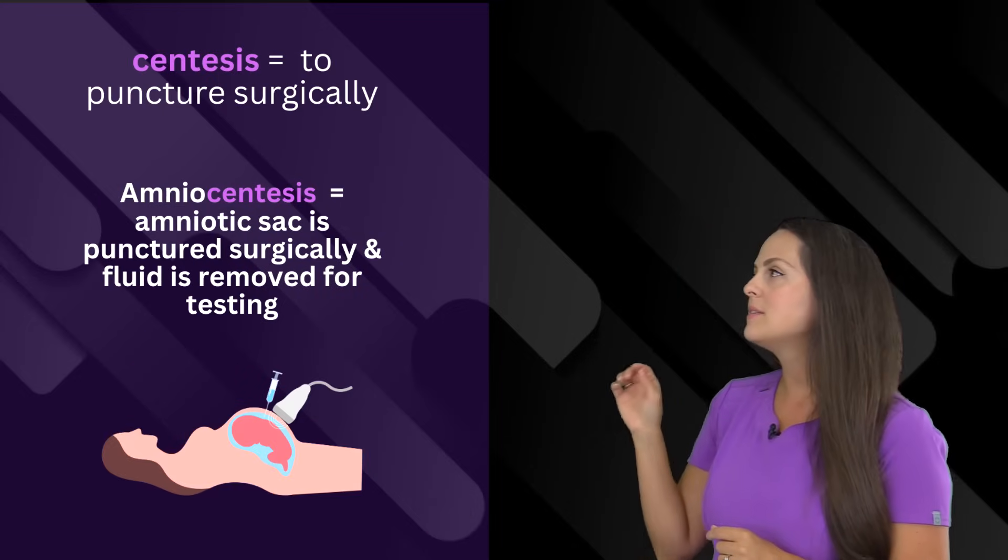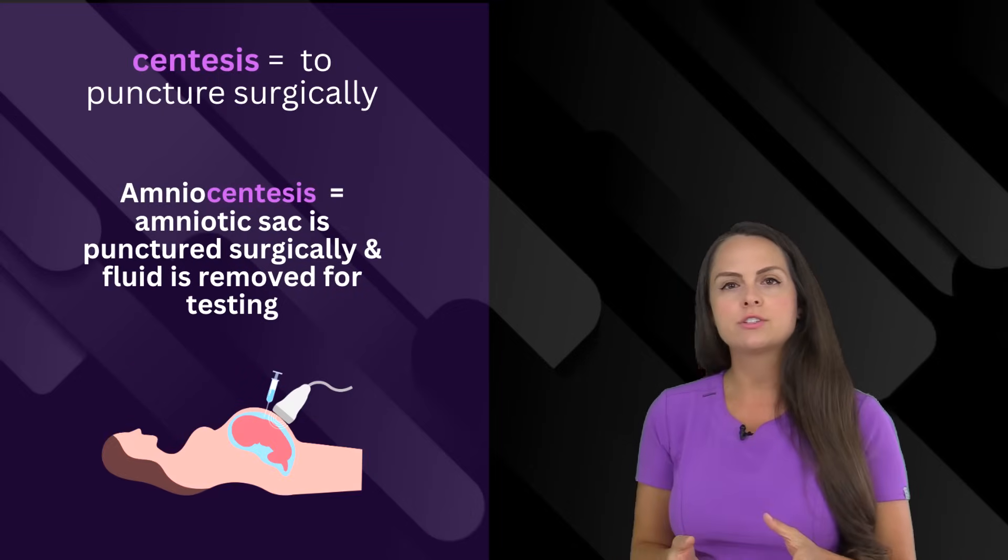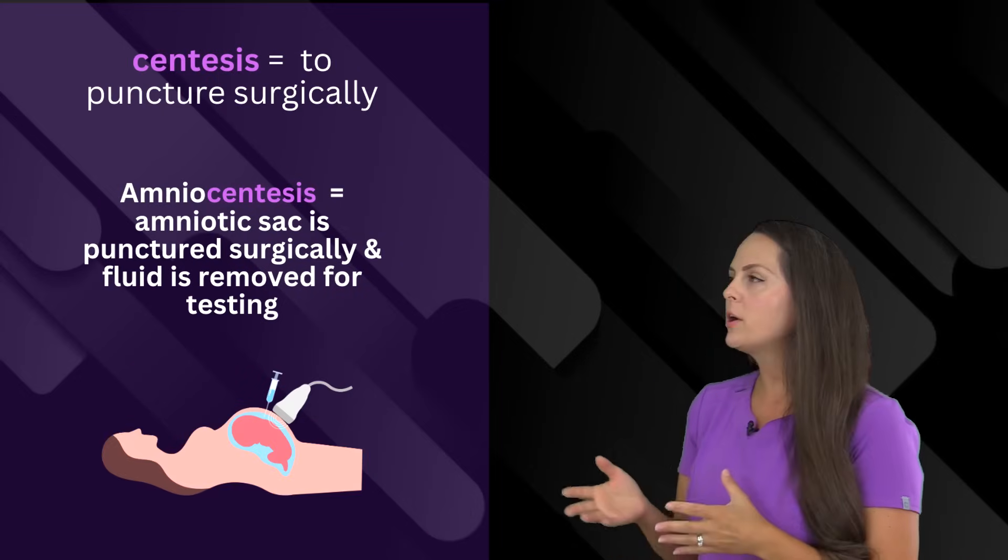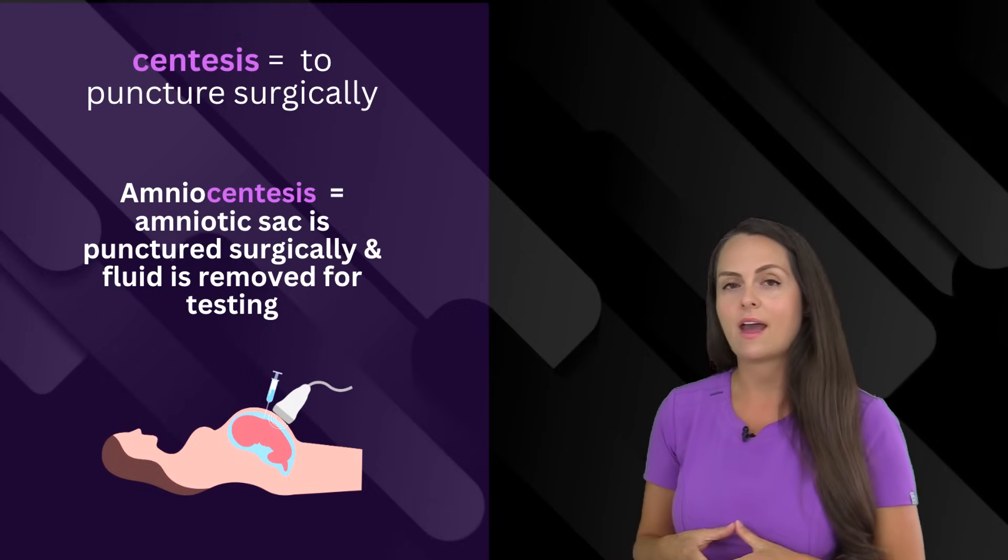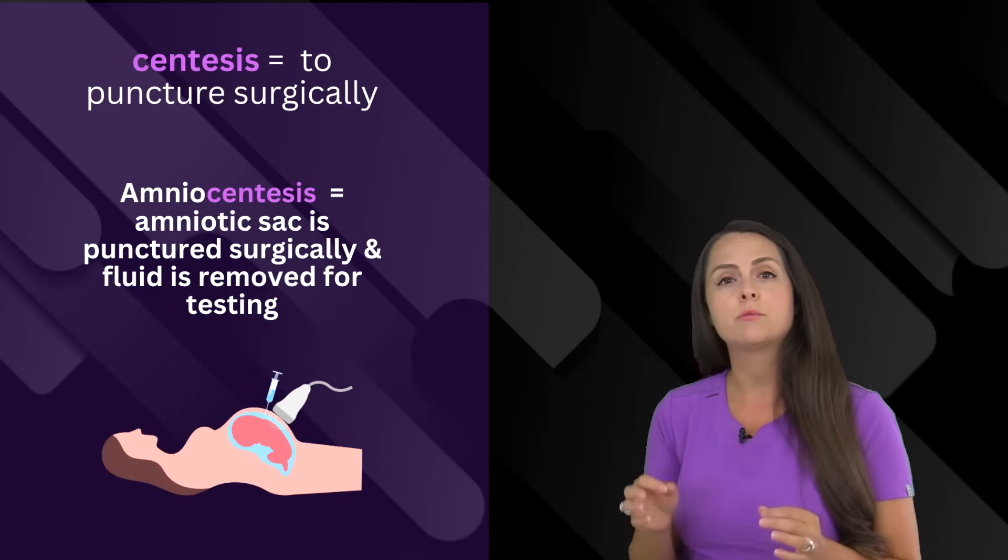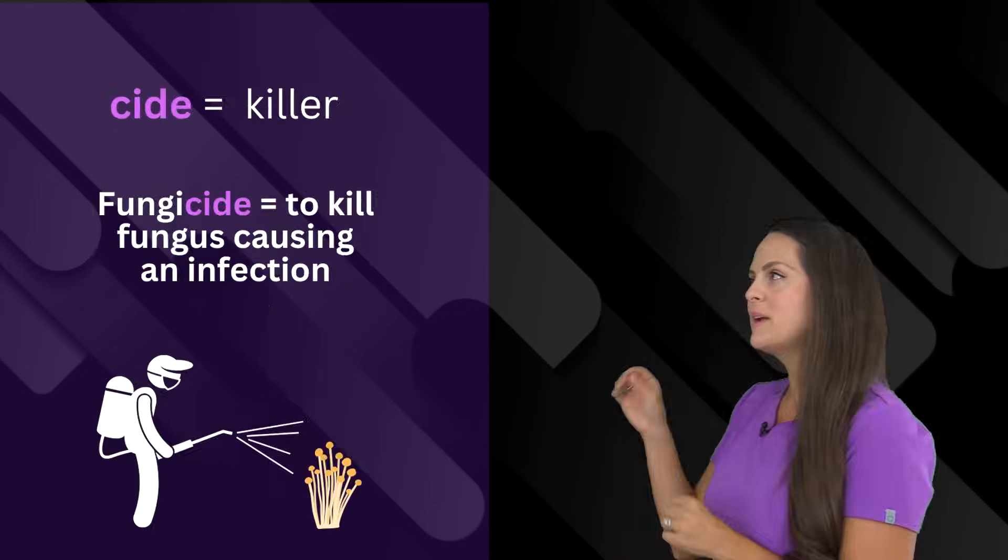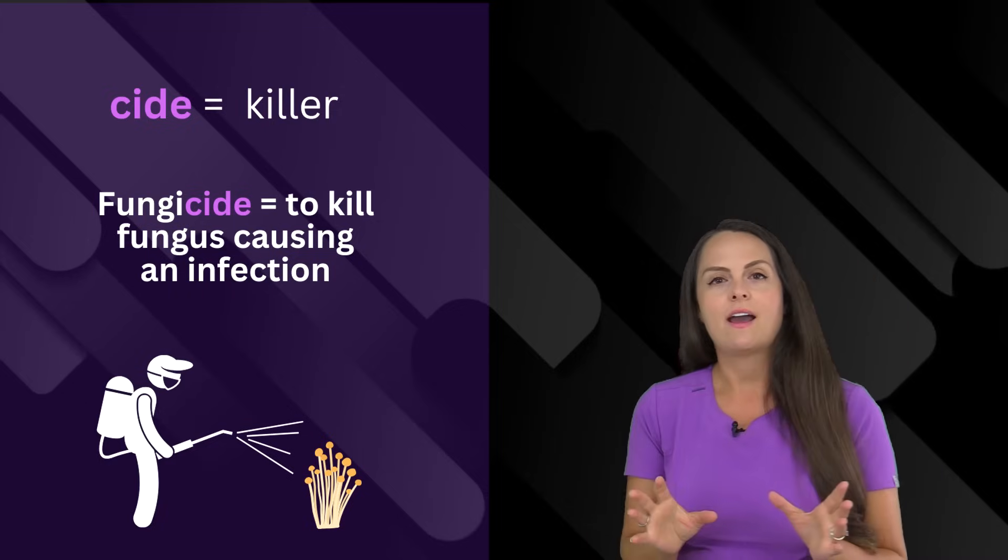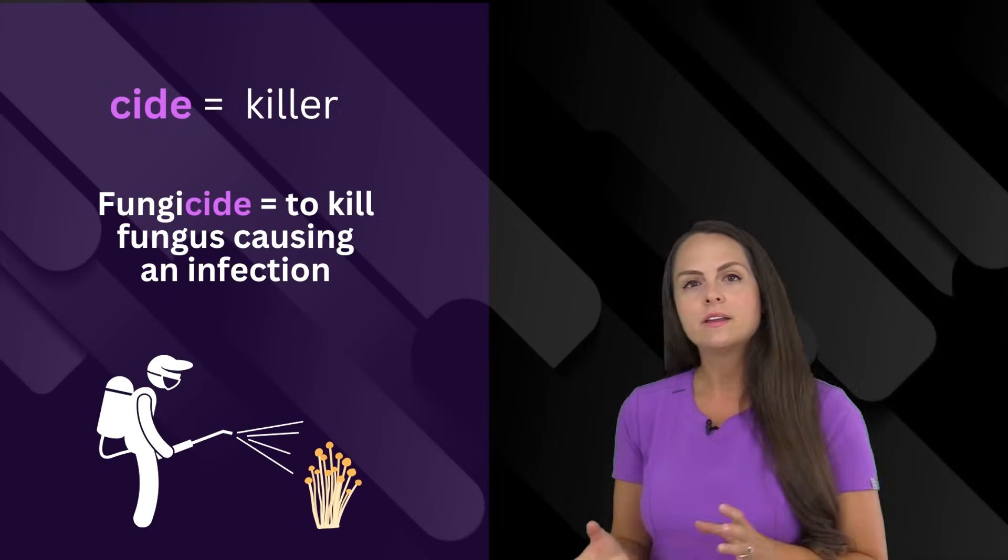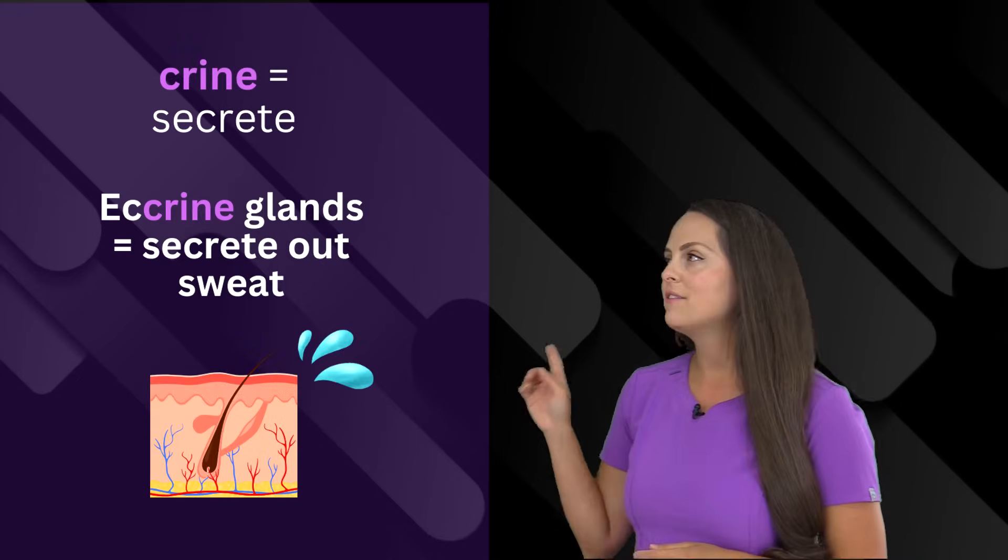Then we have centesis. This means to puncture something surgically. Whenever a person has an amniocentesis, this is where the amniotic sac has been punctured and fluid has been removed for testing. Next we have cide, and this means killer. So if a patient has a fungal infection, we can give them a fungicide.